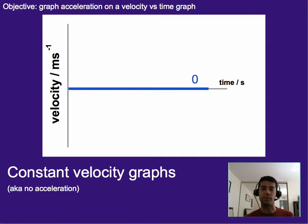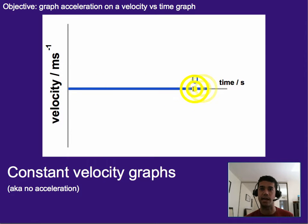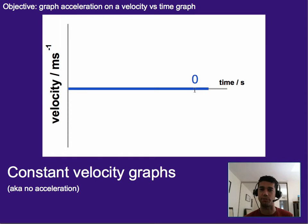One example of that was a constant velocity of zero — this was basically not moving. What's important to note here is that the velocity as time goes on is literally zero the entire time, which means the velocity isn't changing. It's constant — it just happens to be zero.